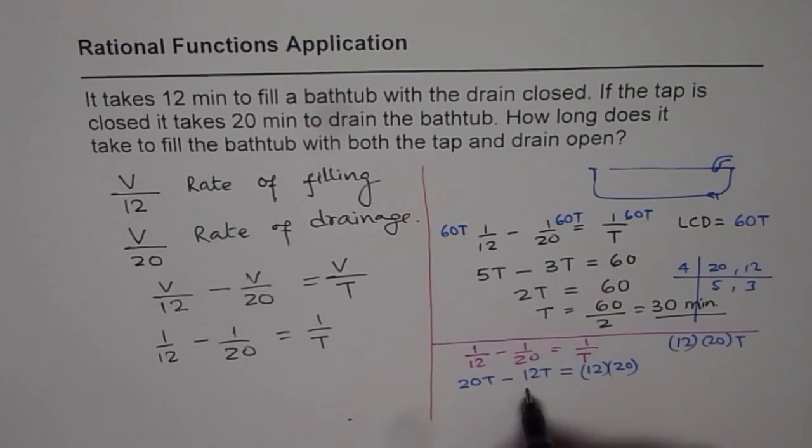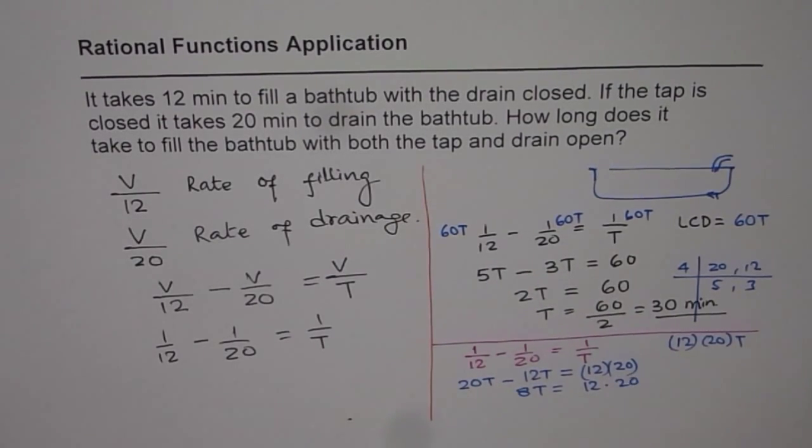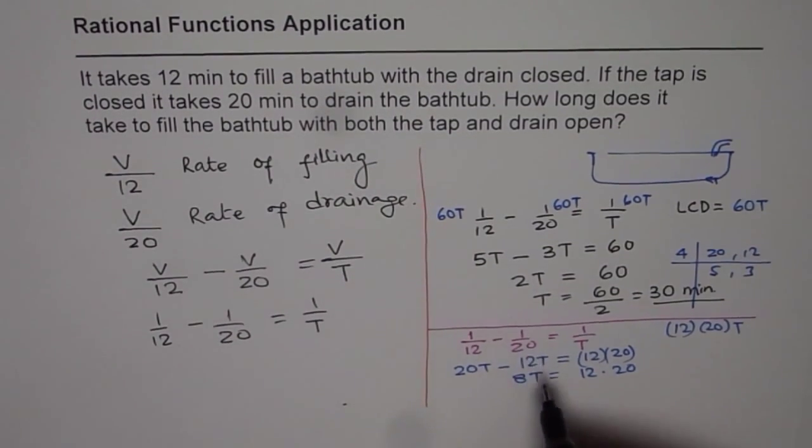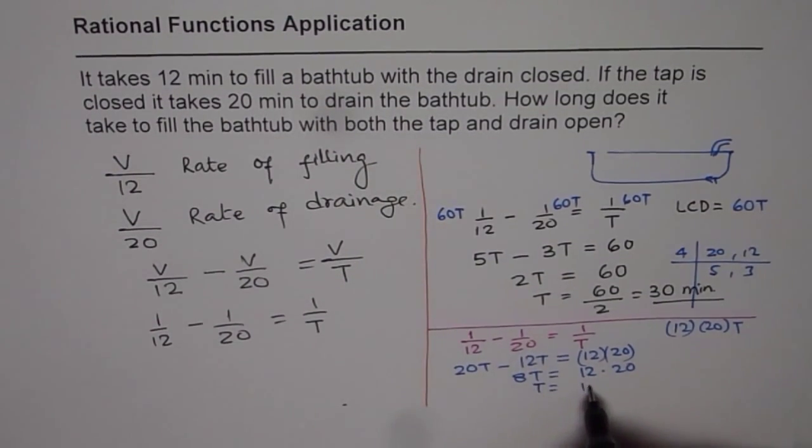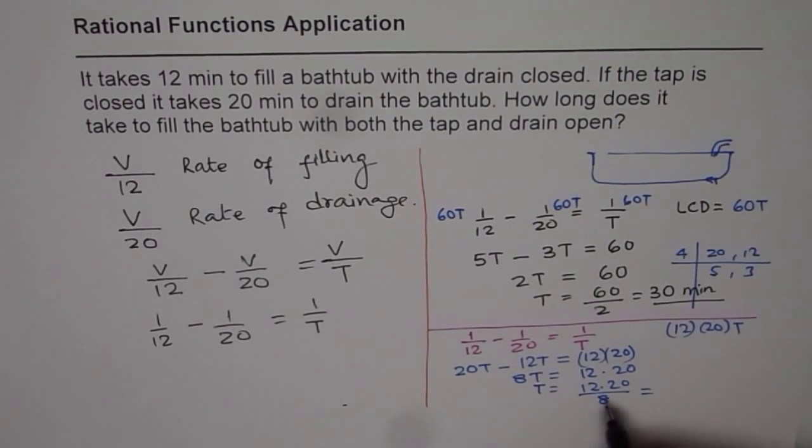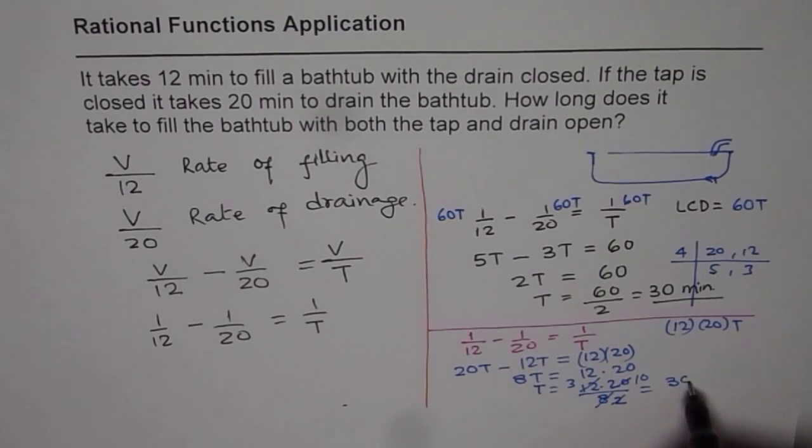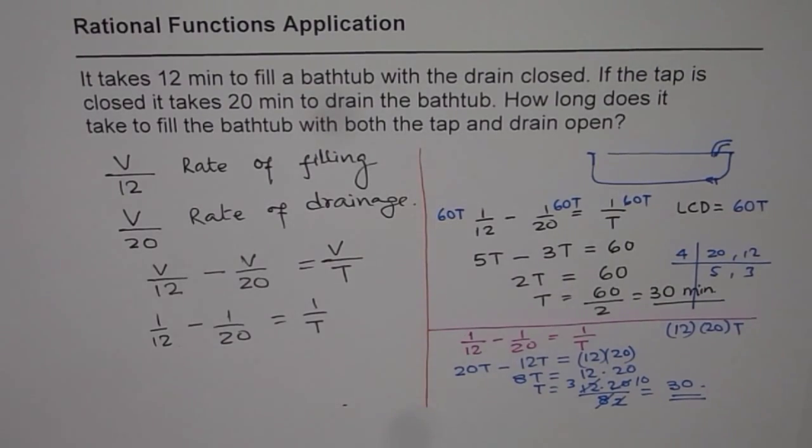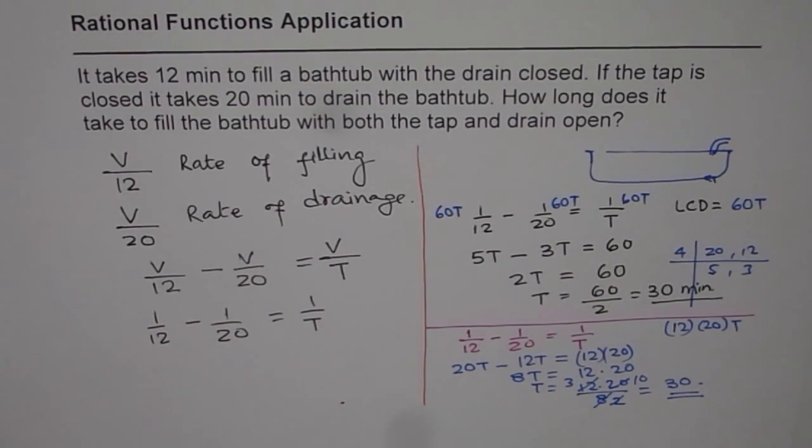So 20 minus 12 is 8, so 8T equals to 12 times 20. And T will be equals to 12 times 20 divided by 8. So 8, if you say 4 times 2 is 8, 4 times 3, and that goes 10 times, so we still get 30 the same answer. So either way, you get 30.